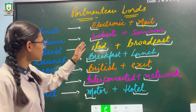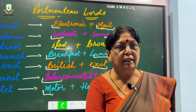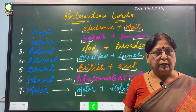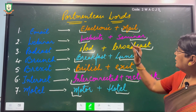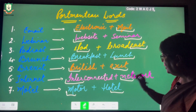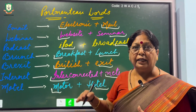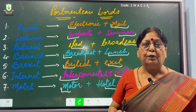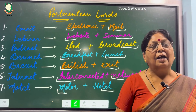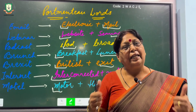A student asked: I noticed that you took the first part of the first word, but from the second word you are taking any part — is that a rule? Yes, generally we take the first part of the first word, and from the second word we can take the whole word, the last part, or any part — first, last, or center. This is how we combine or blend two different words to make a new word, and such new words are known as portmanteau words.